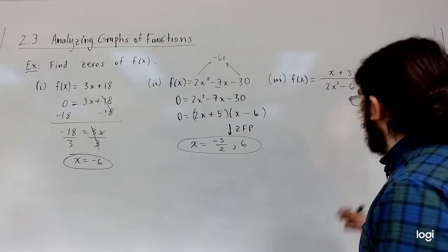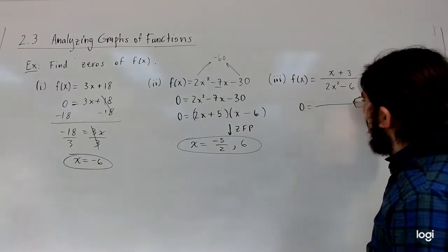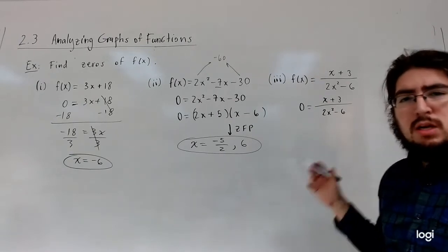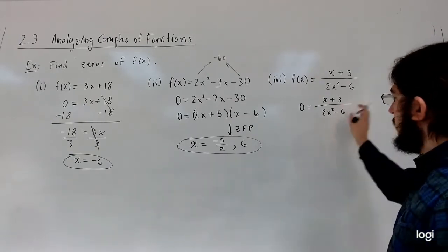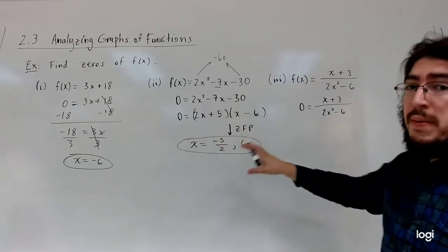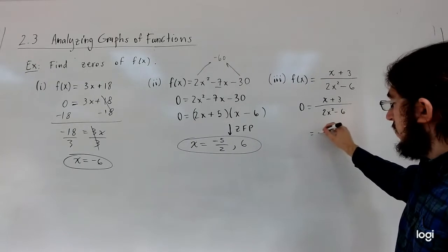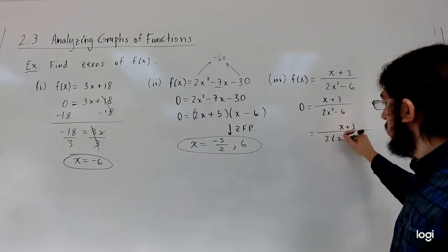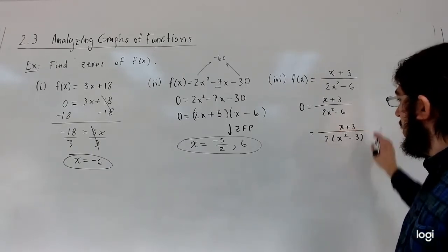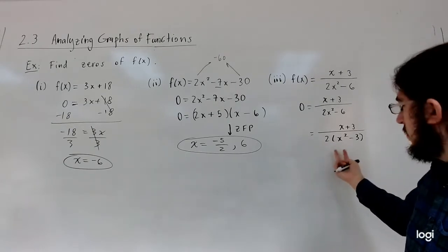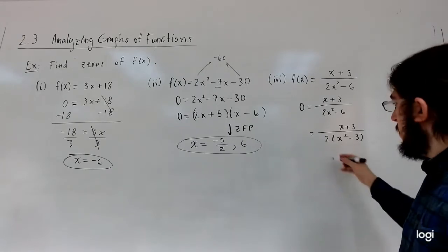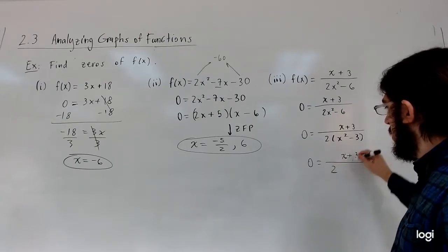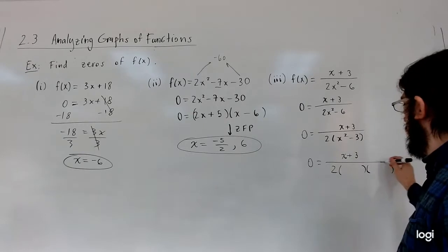The next one is a little different. We want to find x values such that this fraction is zero. I'm going to factor everything. The top is just x plus 3 and can't be factored further. The bottom — you can pull out a 2, giving you x squared minus 3, which you can factor as a difference of squares over irrational numbers.